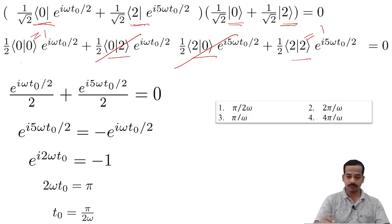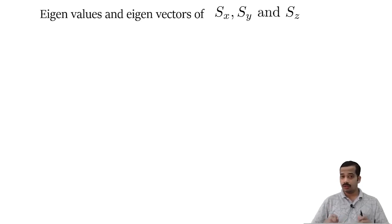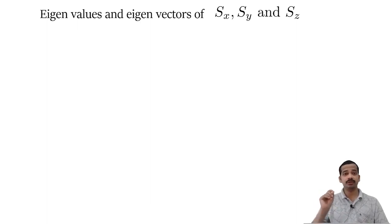Now let us solve one problem related to spin angular momentum — a time evolution problem related to spin in a spin-half system. For that, we should remember the eigenvalues and eigenvectors of S-x, S-y, and S-z, which are the components of spin in the spin-half case.